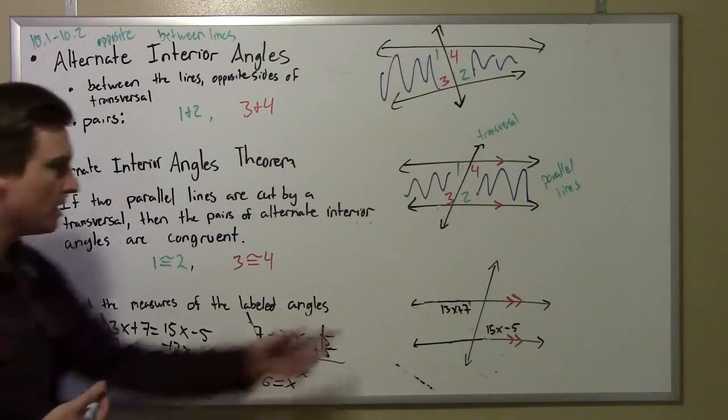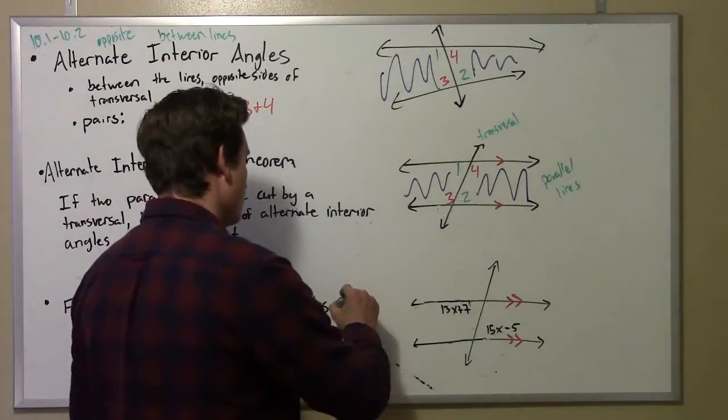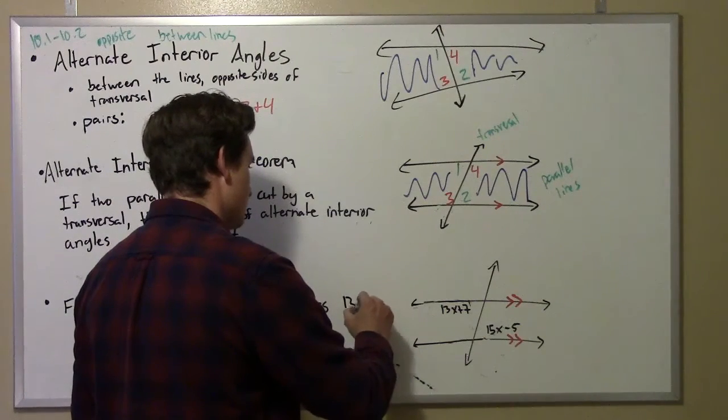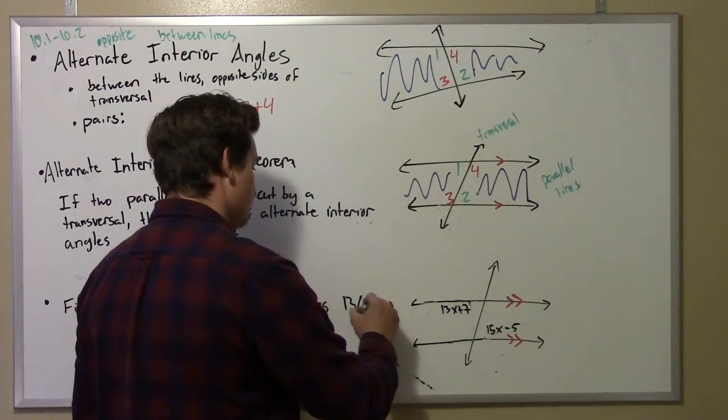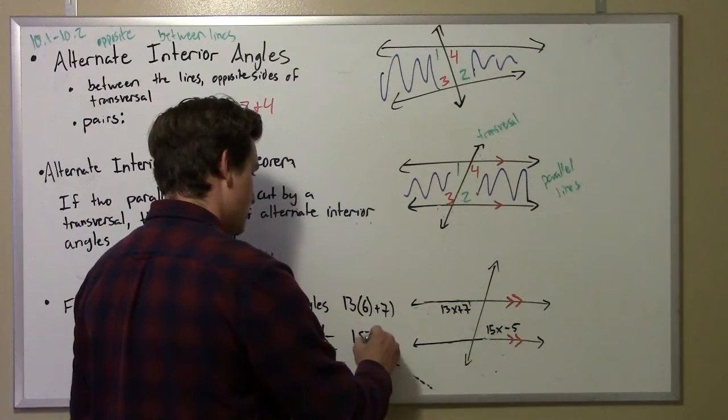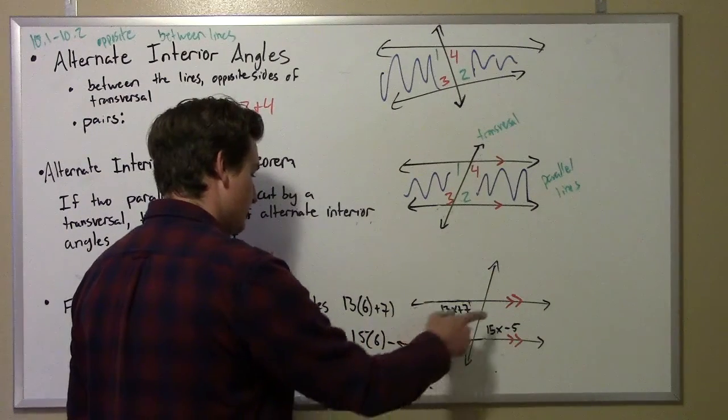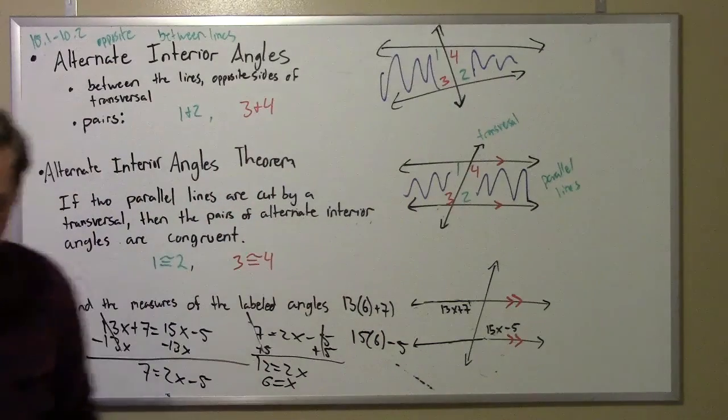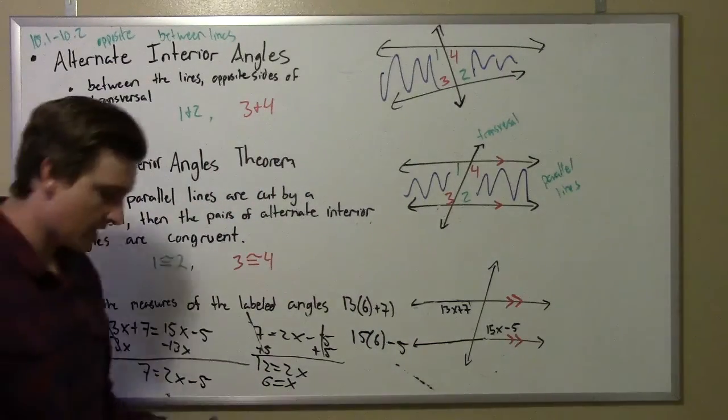We don't want x though, we want two angle measurements. So 13 times 6 plus 7 should give us that angle, and 15 times 6 minus 5 should give us that one. They should be congruent, so let's double check.